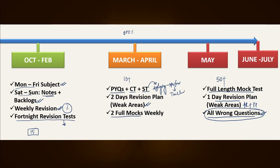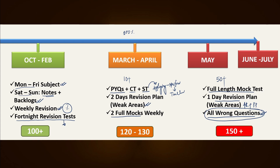When you move through October to February, your score will be somewhere around 100 or less, and that is acceptable because you are in the baby steps. When you jump to March and April, by attempting PYQs, chapter tests, and sectional tests, your score will jump to 120-130. And when you follow this plan properly and religiously from May onwards, you will see your score jumping above 150. This is my guarantee — 17 plus students are already selected through this channel by applying these formulas.